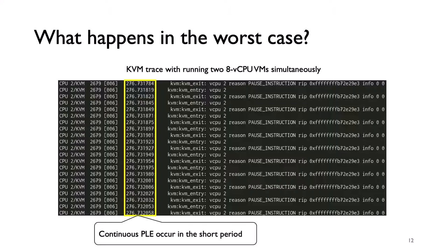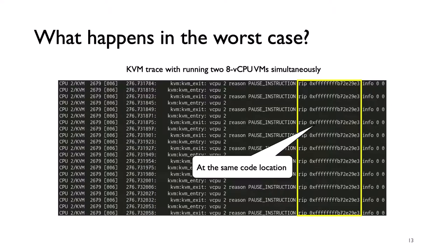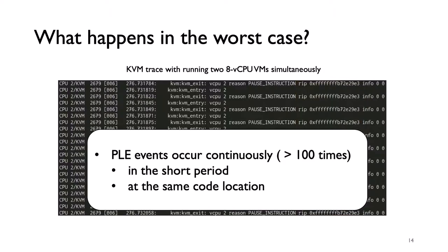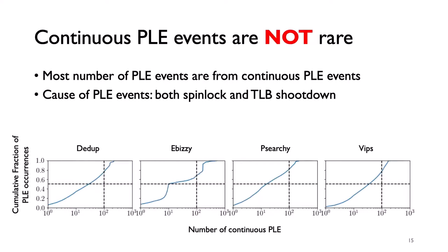These continuous PLE events occur in a short period of time. All PLE events in this trace occur at the same code location. In conclusion, in the worst case, PLE events occur continuously in a short period of time at the same code location. Continuous PLE events incur a large number of VM exits. This kind of phenomenon is not rare, and most PLE events are from continuous PLE events.